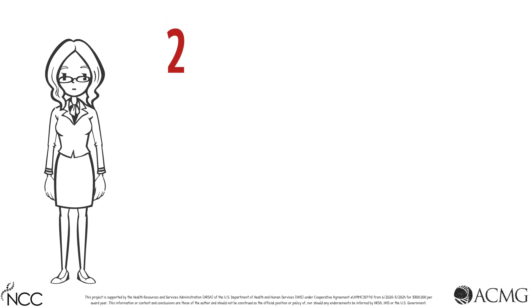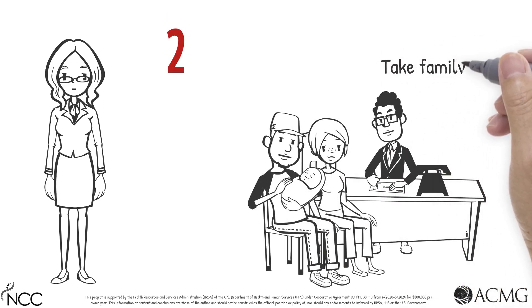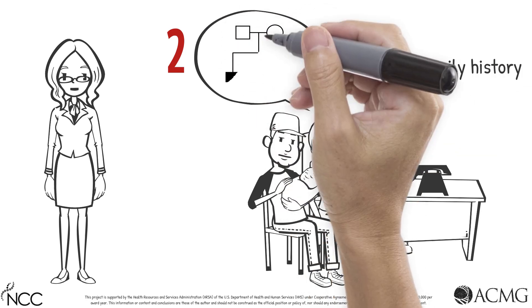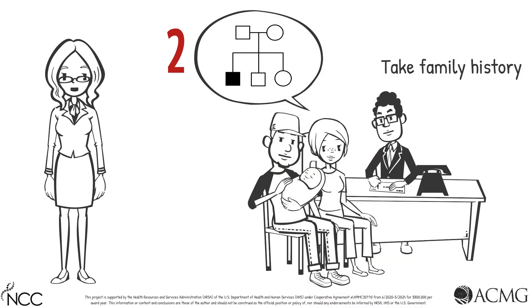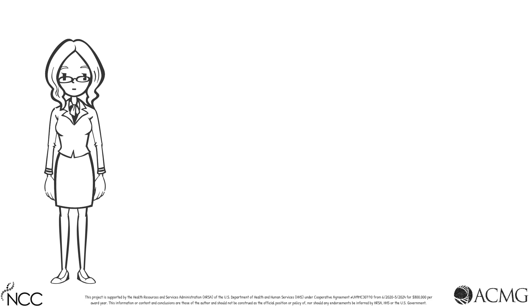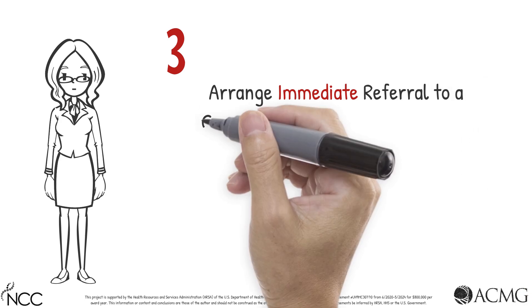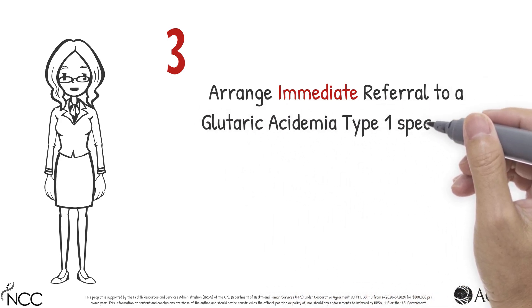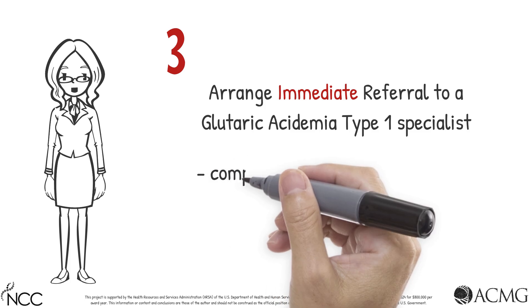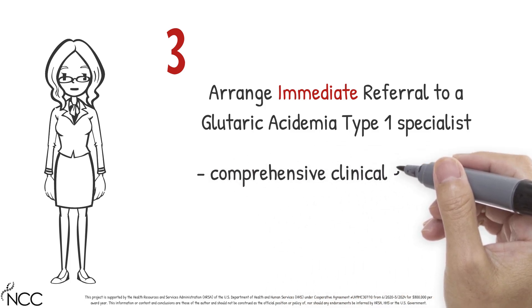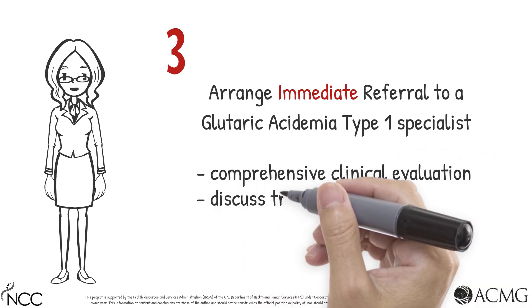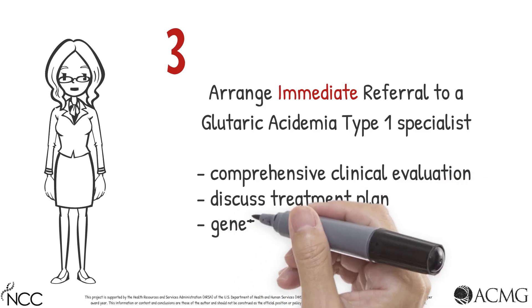Second, take a family history. Because Glutaric Acidemia Type 1 is inherited in an autosomal recessive manner, it is common for there to be no known family history of this disease. Third, arrange an immediate referral to a Glutaric Acidemia Type 1 specialist for a comprehensive clinical evaluation, discussion of a treatment plan, and genetic counseling.